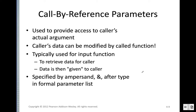In this segment we'll see a different type of parameter passing known as call by reference. In call by value we send a copy of the actual argument, but in call by reference we provide access to the caller's actual argument — not a copy. We send the actual argument, so the caller's data can be modified by the called function.